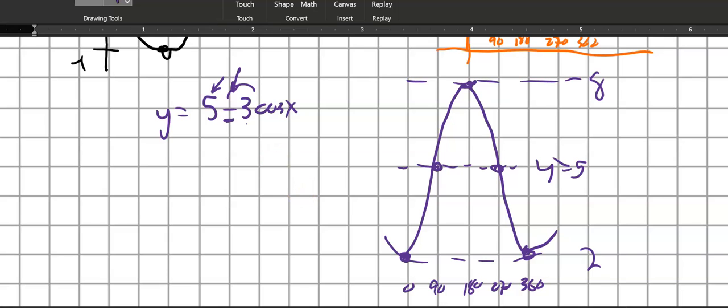Notice if it had been positive, if it had been 5 plus 3 cosine x, it would start up at the maximum and go down. What that negative multiplier does is it flips it or reflects it across the midline. All right. I hope that helps.